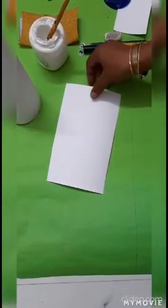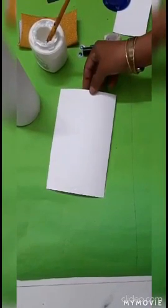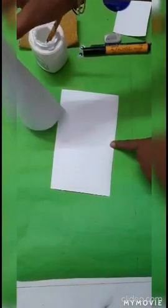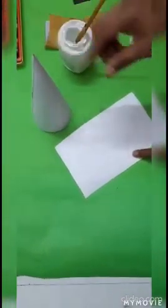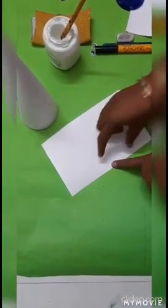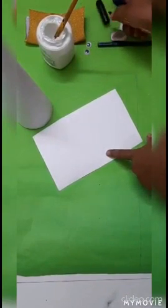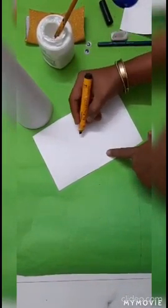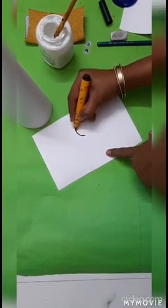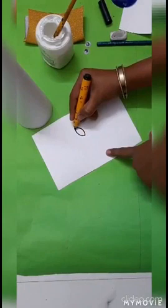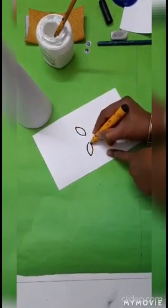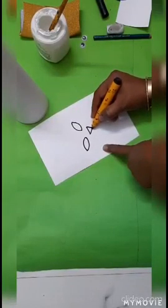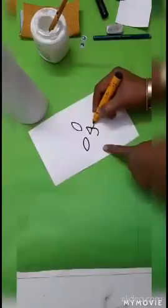For the face of the cat, here I am using rectangular-shaped paper. According to your cone size, you will use this paper. Now on the middle of this rectangular shape, I will draw the face of the cat using black marker. Children, if it is not possible for you to draw it with black marker directly, first you will do it with pencil and then outline it with the marker like this.